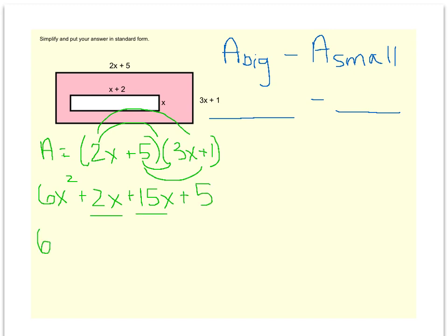When I combine these like terms, I get 6x squared plus 17x plus 5. So that is the area of my big rectangle, so I could rewrite it up here if I wanted to. 6x squared plus 17x plus 5.